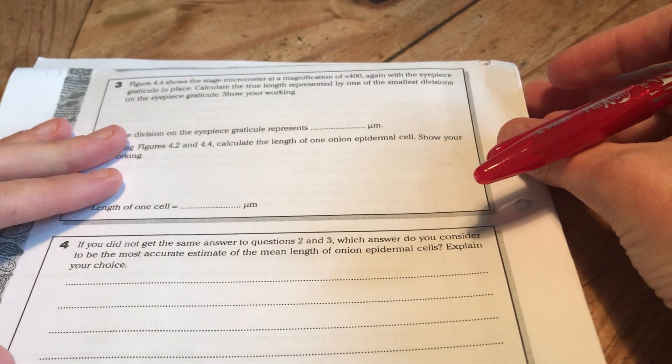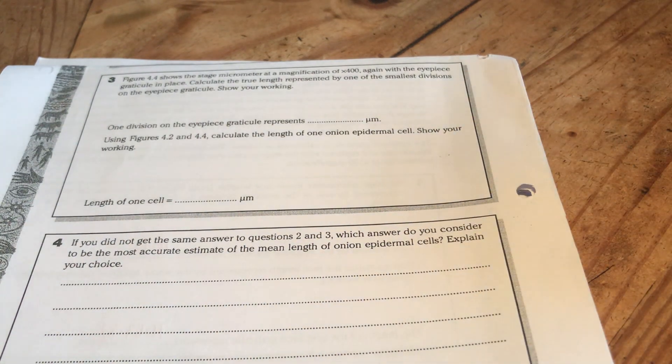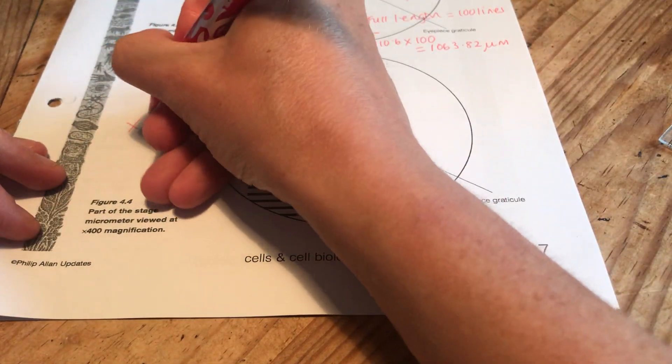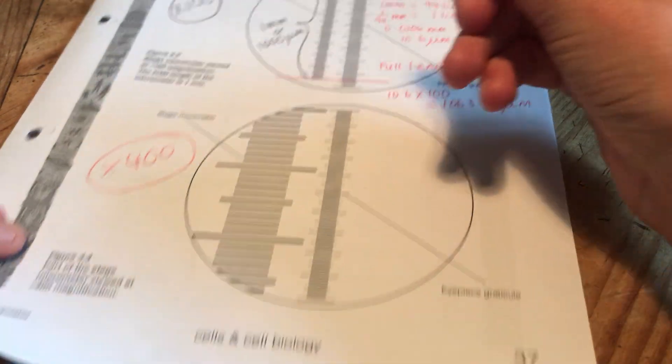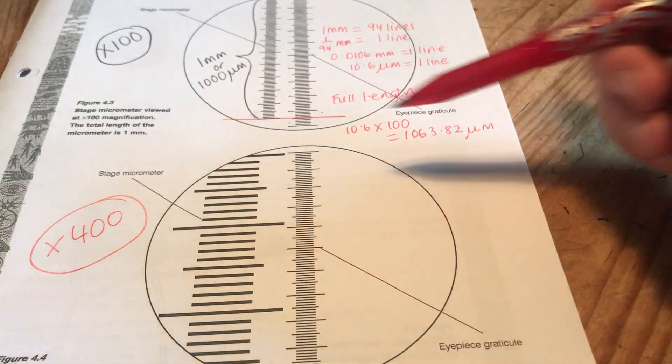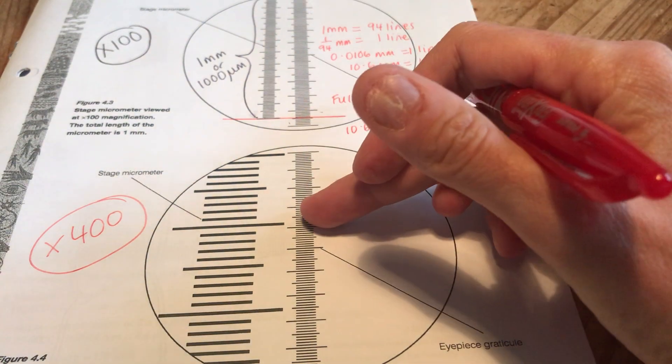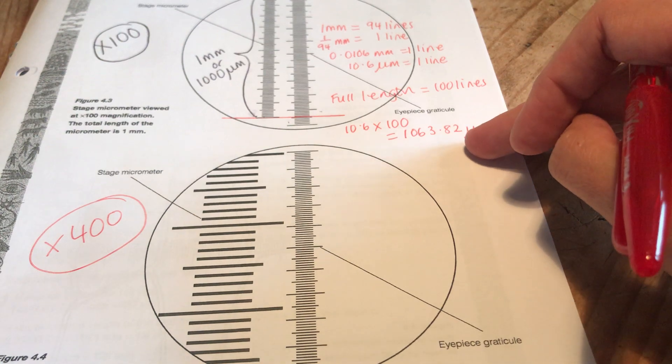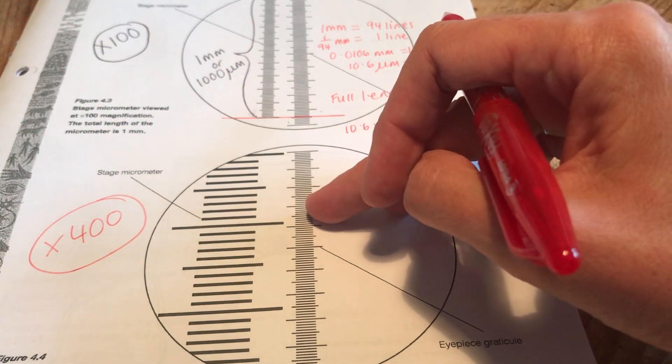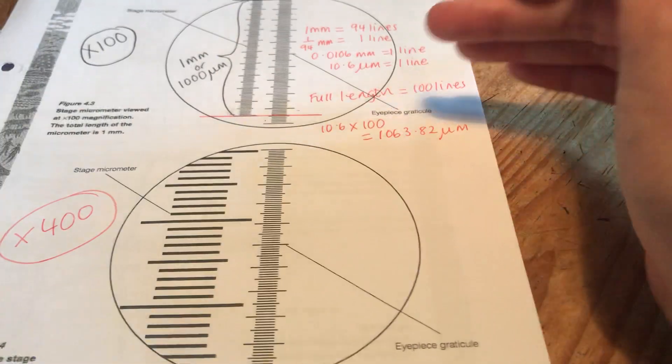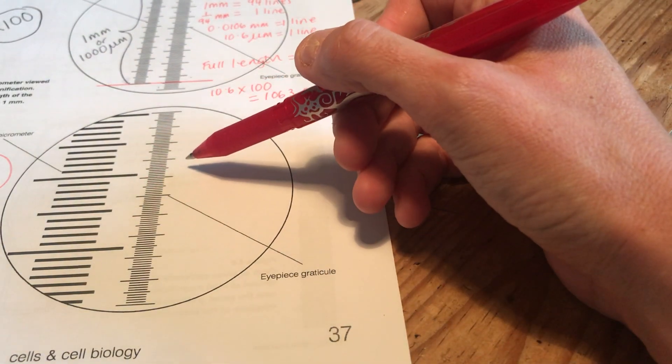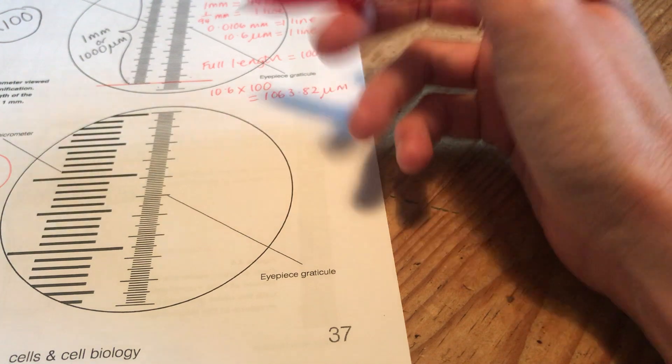Then question three. It says, figure 4.4 shows the stage micrometer at a magnification of times 400. So we've got bigger now. Let's find 4.4. There we go. So this, let's just put a little reminder, 400 times magnification this time. So even though my eyepiece graticule is the same length, now each line is worth a different distance on the stage micrometer. So I need to, we call this calibrating. We are recalibrating the eyepiece graticule on a different magnification. Let me read the question again. Calculate the true length represented by one of the smallest divisions on the eyepiece graticule. Show your working.